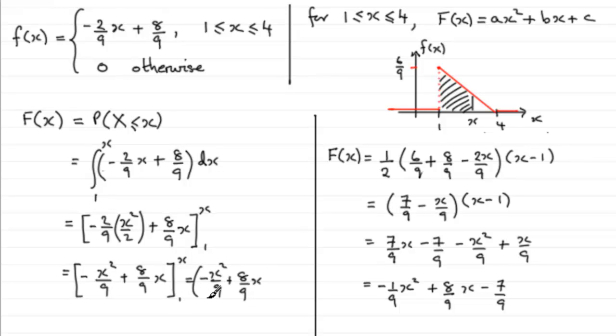And then when we substitute the 1, we have to subtract what we get when we put the 1 through. So that's going to be minus 1 ninth plus 8 ninths, which is going to be 7 ninths. So we'll just squeeze the 7 ninths in there. And can you see that when we expand these brackets, we essentially get what we had there. Let's just put that in finally on this bottom line. Minus x squared over 9 plus 8 ninths x minus 7 ninths.